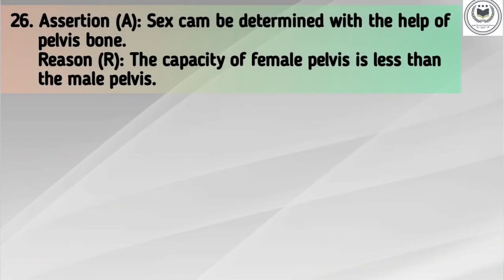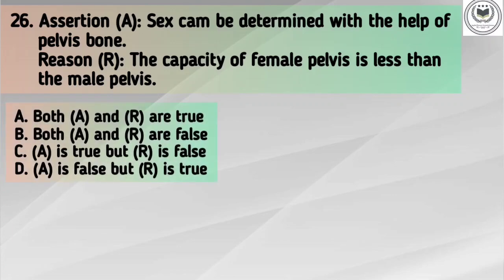Question number 26. Assertion A: Sex can be determined with the help of the pelvis bone. Reason R: The capacity of the female pelvis is less than the male pelvis. Options: A. Both A and R are true. B. Both A and R are false. C. A is true but R is false. D. A is false but R is true. The answer is option C: A is true but R is false.